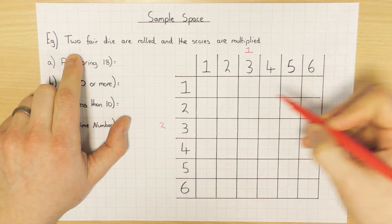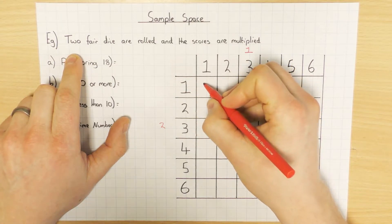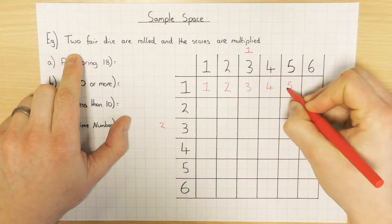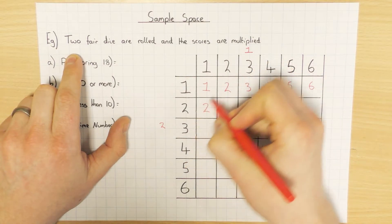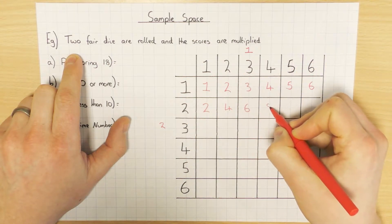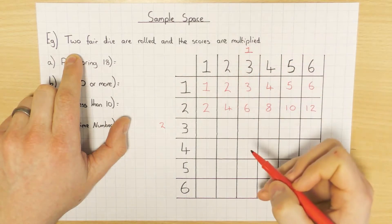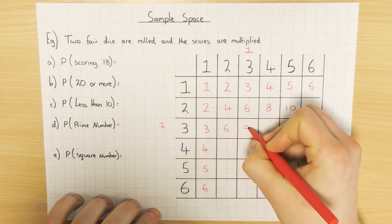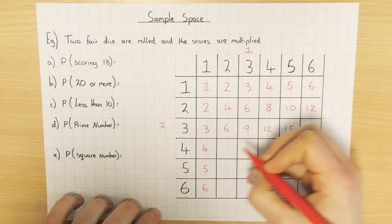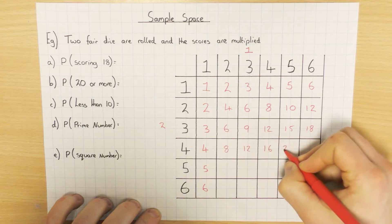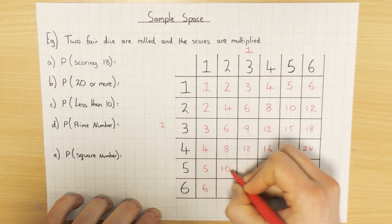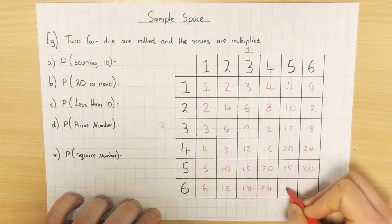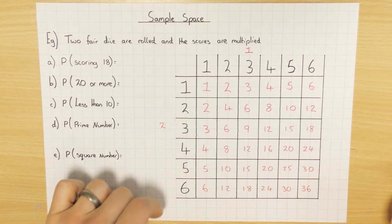In this situation we are multiplying the scores. I'm going to multiply all values together: one times one is one, one times two is two, one and three is three, then four, five, six. Two times one is two, two times two is four, two times three is six, and so on. Finishing off: 12, 15, 18, 4, 8, 12, 16, 20, 24, 5, 10, 15, 20, 25, 30, and then 6, 12, 18, 24, 30, and 36. There's the completed sample space.